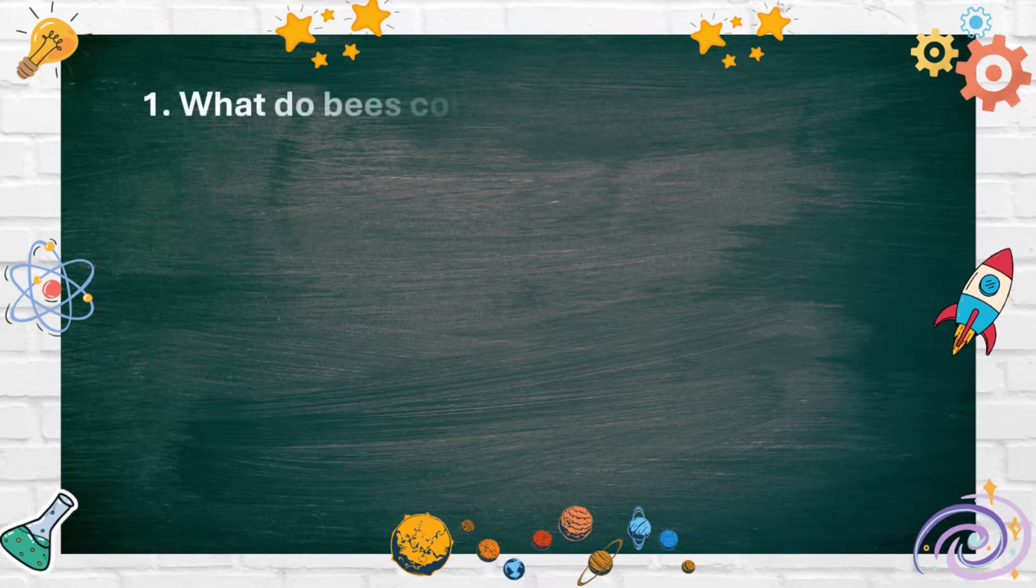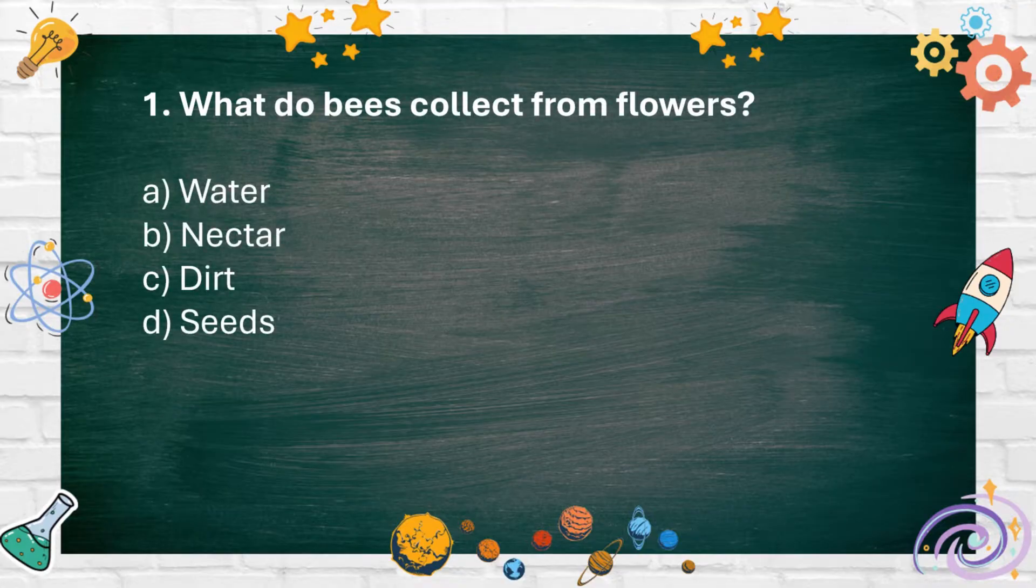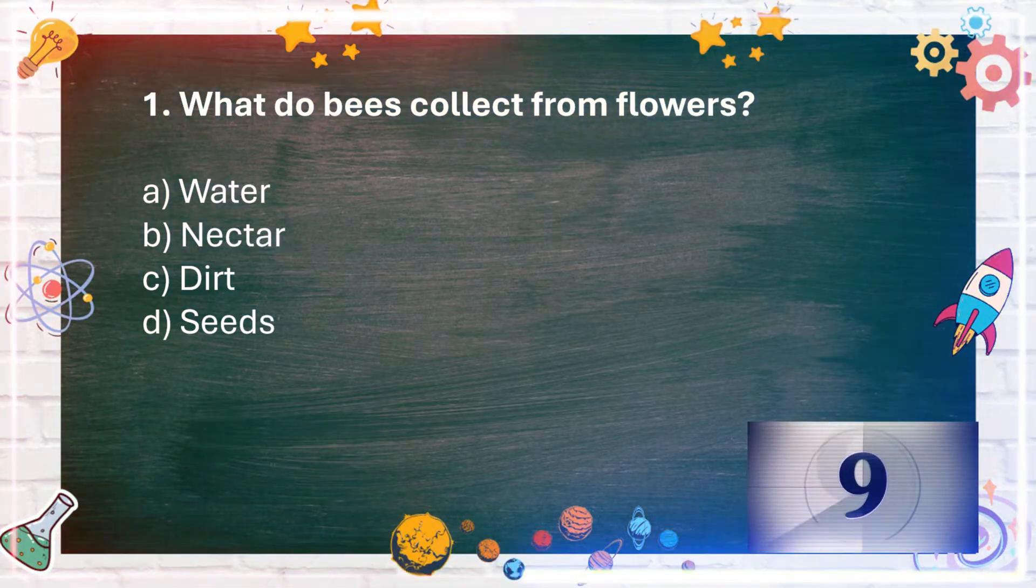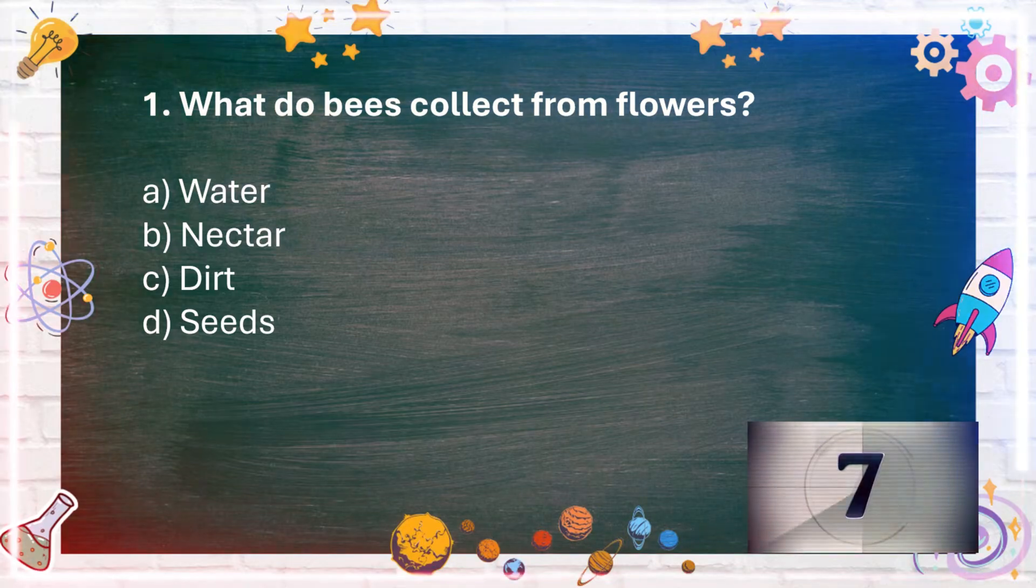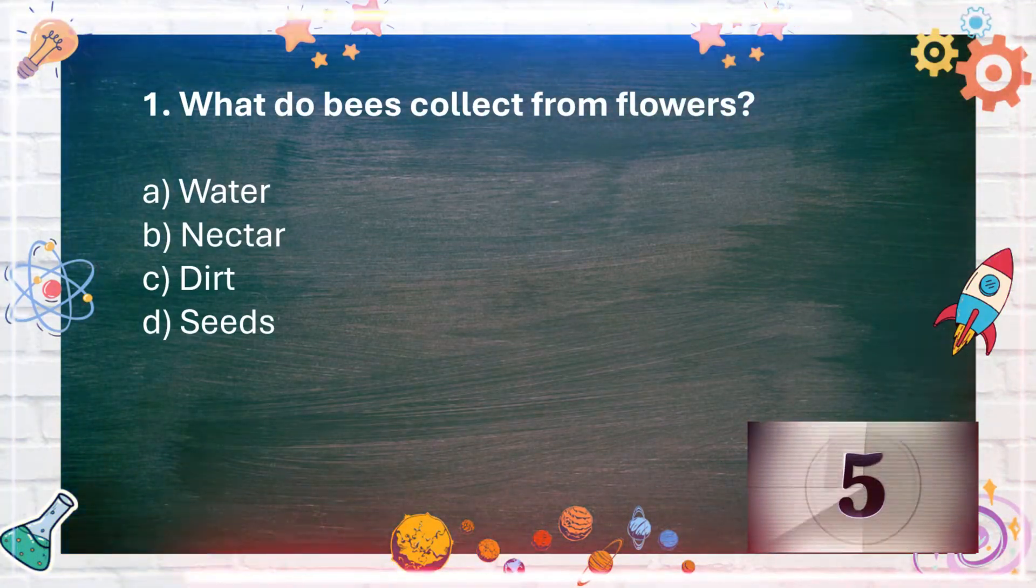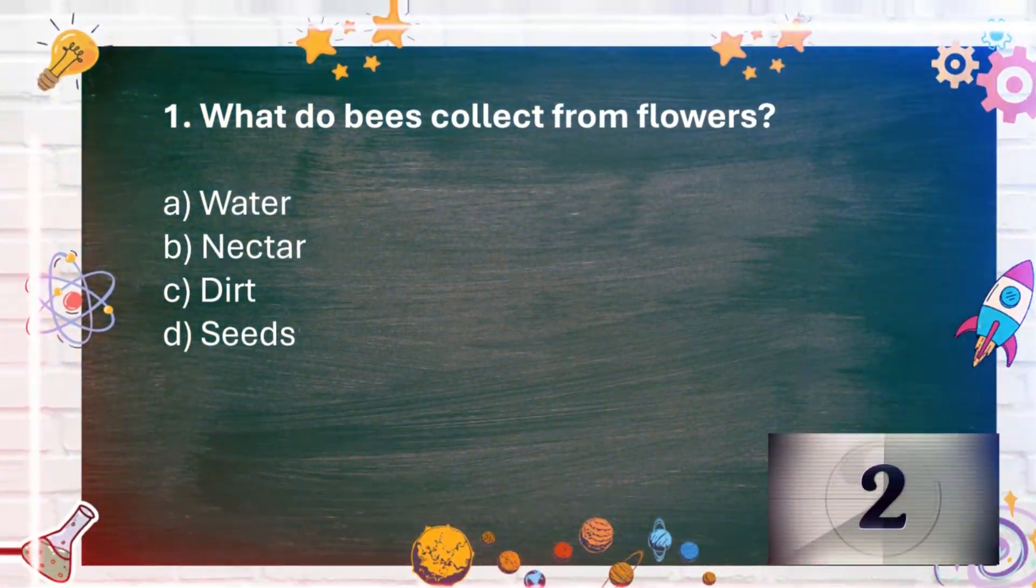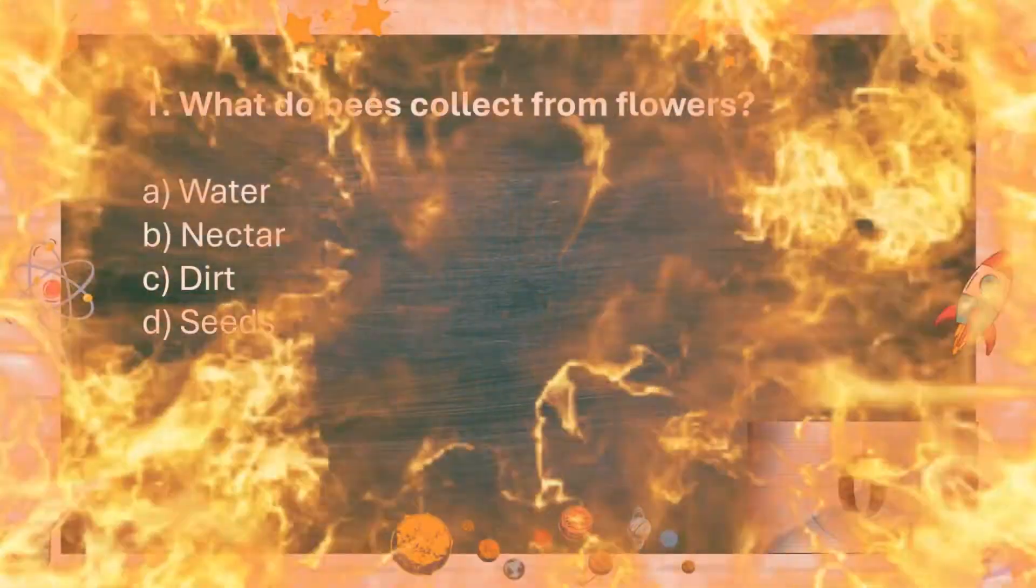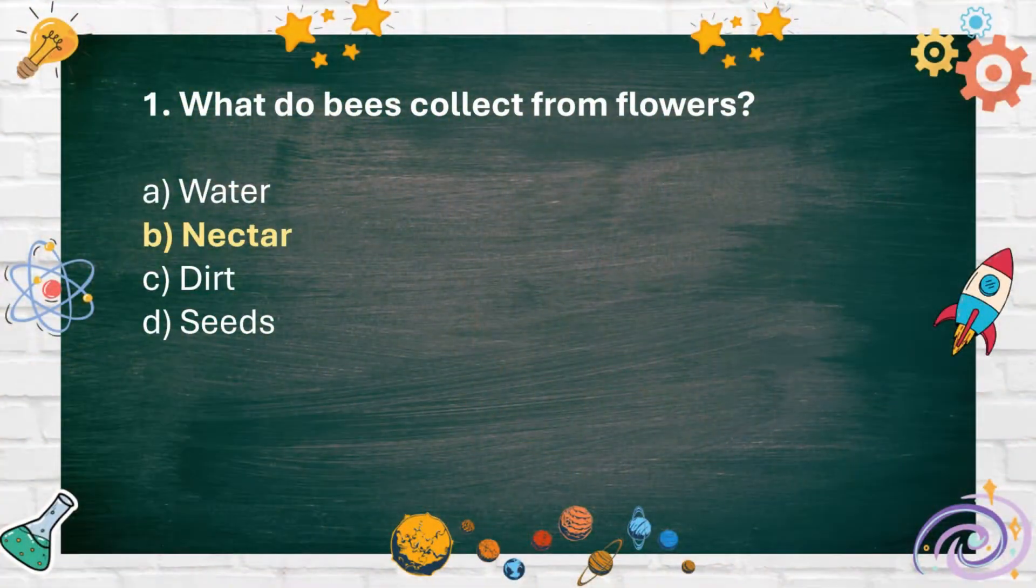Number 1. What do bees collect from flowers? A. Water B. Nectar C. Dirt D. Seeds. The answer is B. Nectar.